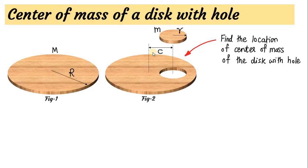Here c is the centre-to-centre distance — the distance between the centre of the original disc and the centre of the small disc or the centre of the hole. Small m is the mass of the small disc that has been cut and removed to create the hole.